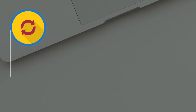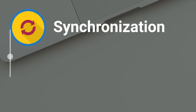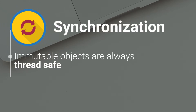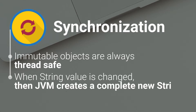Third, synchronization. Immutable objects, in general, are thread-safe because they can be shared across multiple threads running simultaneously. They are also thread-safe because if a thread changes the value, then instead of modifying the same, a new string would be created in the string pool. Hence strings are safe for multithreading.